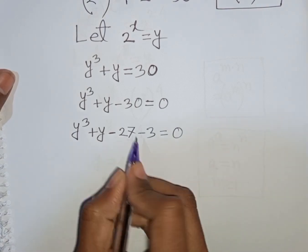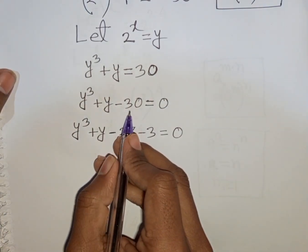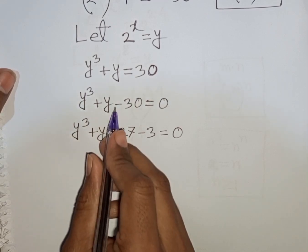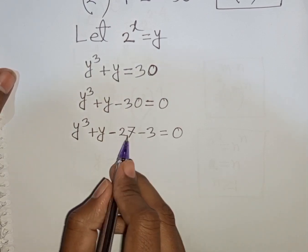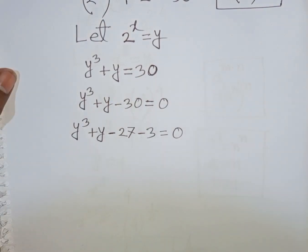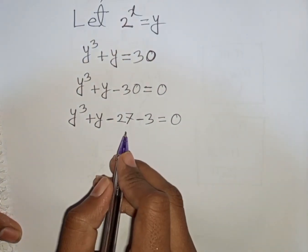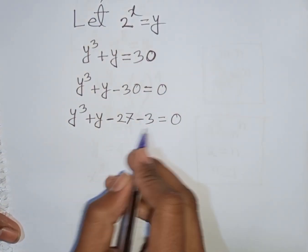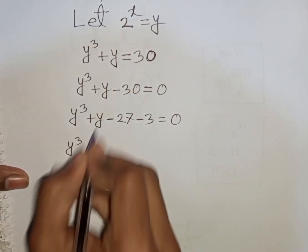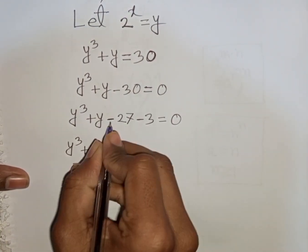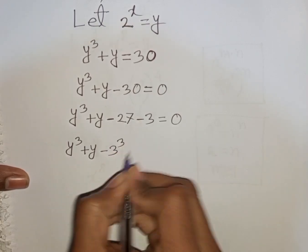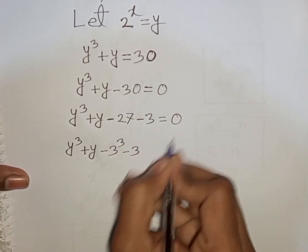How to understand this? Pay attention: the nearest cubic number of 30 is 27. So minus 30 can be written as minus 27 minus 3. Now we have y cube plus y, then minus 27, which is same as minus 3 cube, then minus 3, is equal to 0.